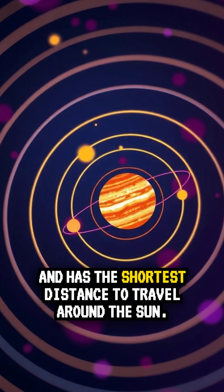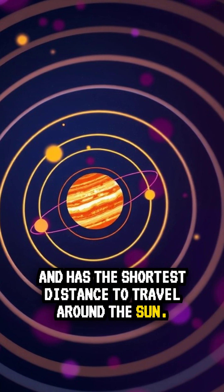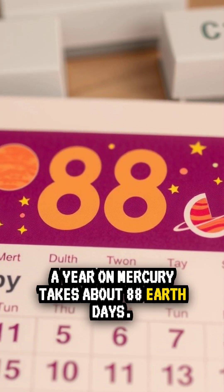It is also the fastest and has the shortest distance to travel around the sun. A year on Mercury takes about 88 Earth days.